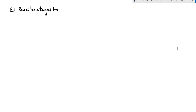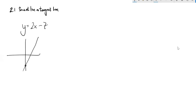This is section 2.1 for Math 151. What we're going to do first is talk about the steepness of functions. For example, if I had something like y equals 2x minus 7, we know that's a straight line. It would have a y-intercept of negative 7 and a slope of 2. Notice that this function has a constant slope.